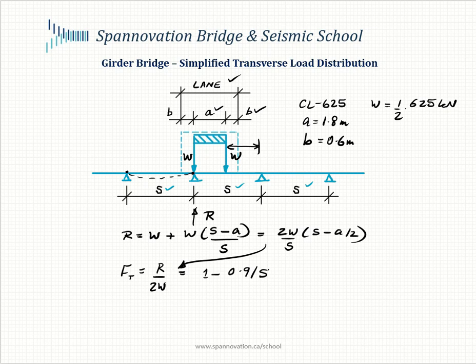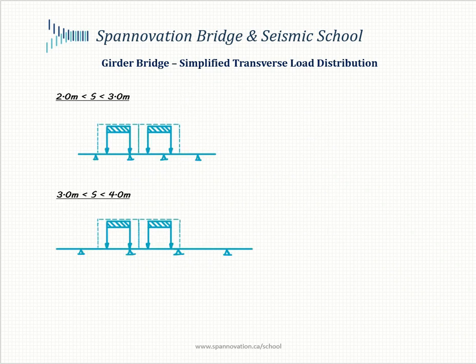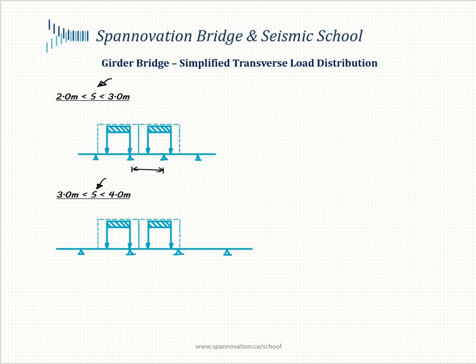This is for one lane loaded. As designers we need to maximize load effects, and the bridge can accommodate more than one lane, so we look at scenarios with two or more lanes loaded. We examine two controlling cases: girder spacing between 2 and 3 meters, and spacing between 3 and 4 meters. A three-lane scenario was considered but the two-lane cases control. Working to find reaction R under the governing girder.